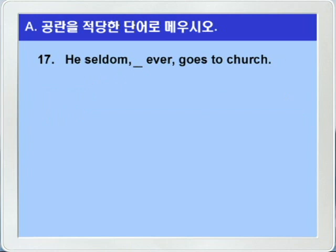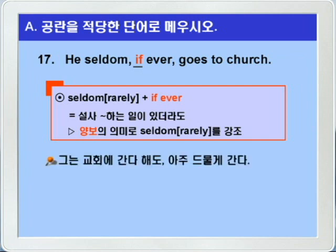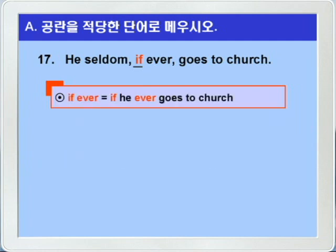17번인데요. 우리 방금 16번에서 나왔던 내용이 그대로 나왔습니다. blank에는 if가 들어가면 되겠습니다. if ever는 seldom, rarely 같은 빈도를 나타내는 부정어 바로 뒤에서, 설사 뭐뭐하는 일이 있더라도, 이런 양보의 의미로, seldom이나 rarely 같은 부정어를 강조한다고 그랬어요. he seldom, if ever, goes to church. 그는 if ever, 간다 하더라도, 교회에 아주 드물게 간다. if ever는 if he ever goes to church에서 중복되는 모든 말이 생략되고 if ever만 남은 형태가 됩니다.